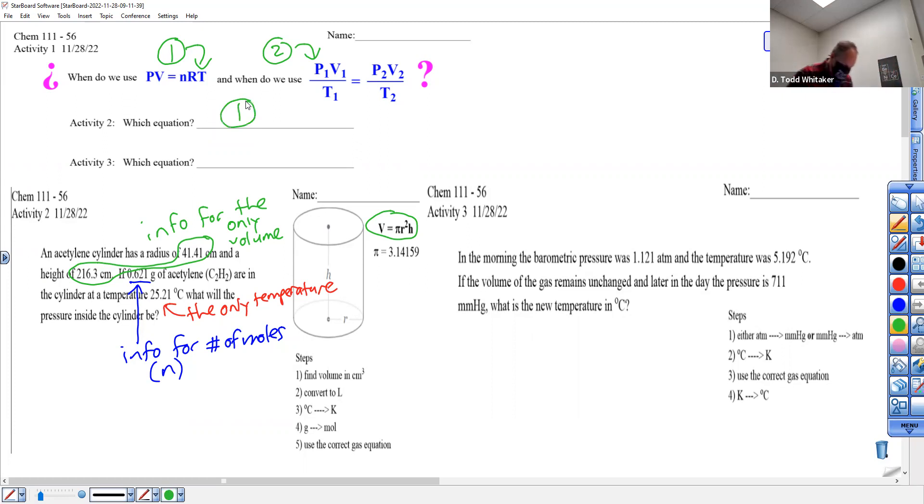And activity three, I'm given ATM. What is that a measure of? Pressure. And this is the original pressure, call it P1. This is the original temperature, call it T1.